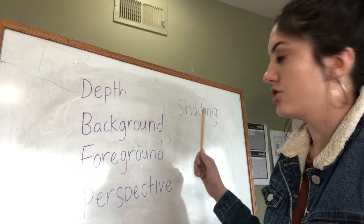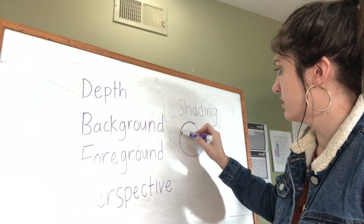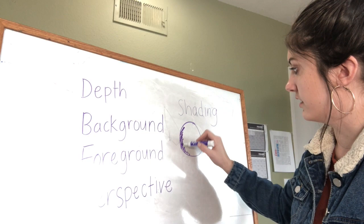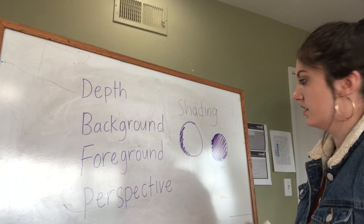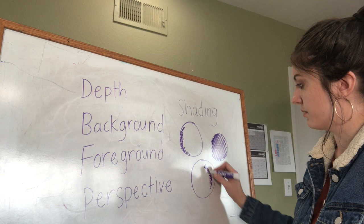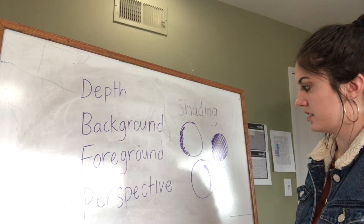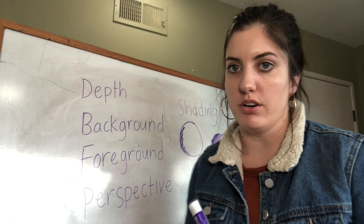Shading: if you have a circle, you can shade one side to make it look like there's a shadow or make it look more three-dimensional. You can shade it in fully, or you can shade just a little bit in the middle to make it look like there's light on it. Those are different types of shading, and we'll do a little bit of that on our bunny.